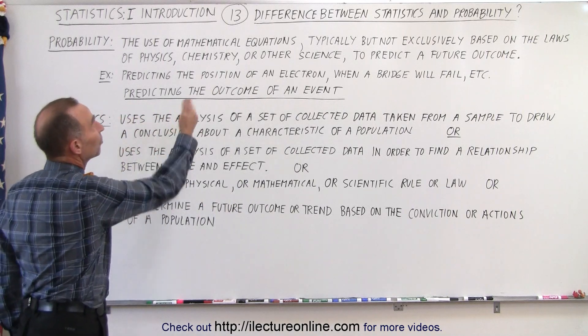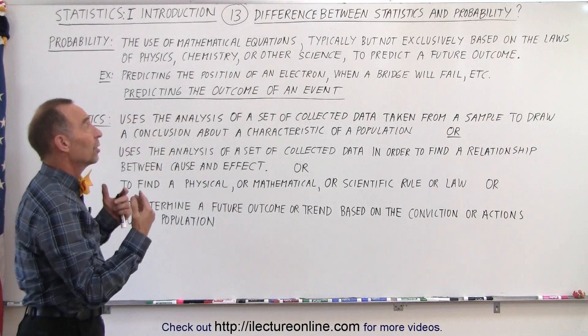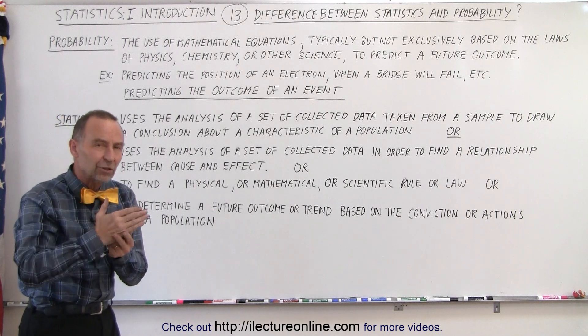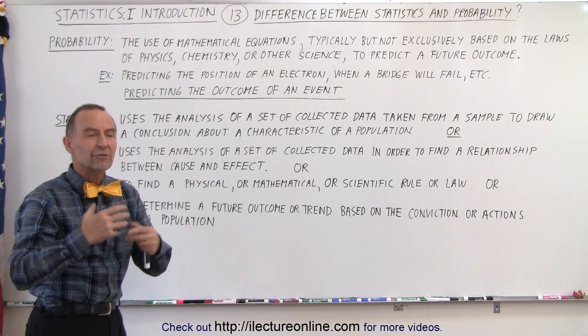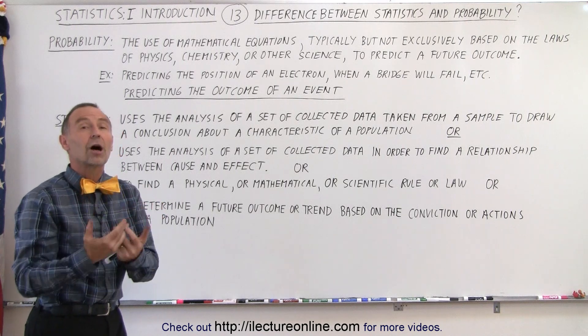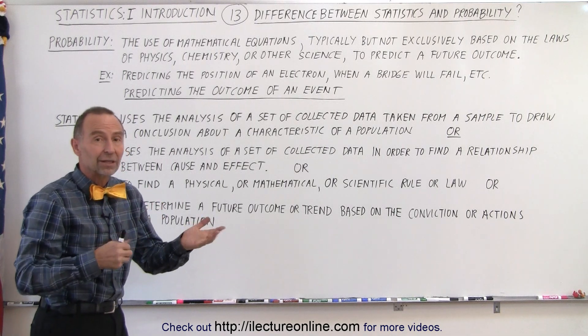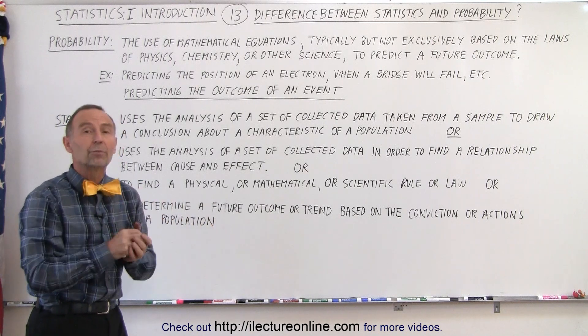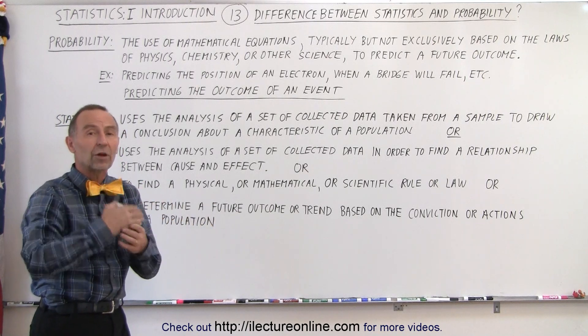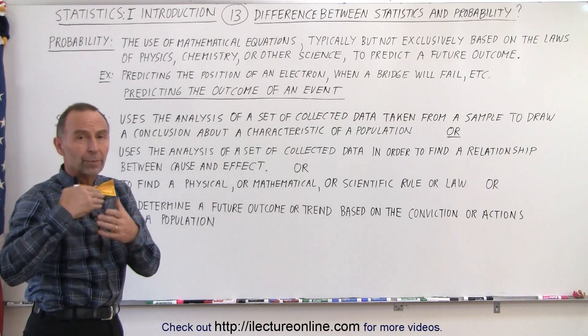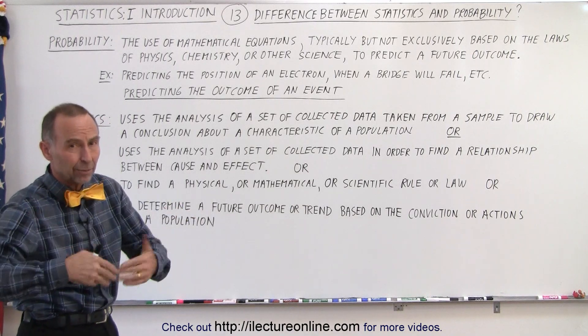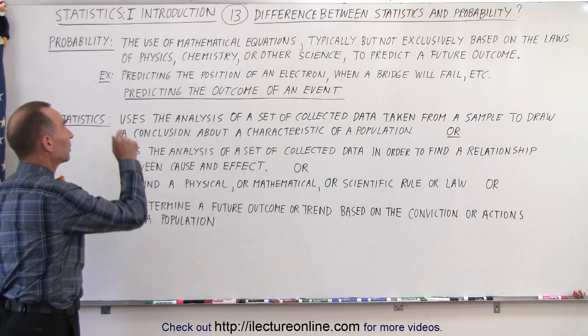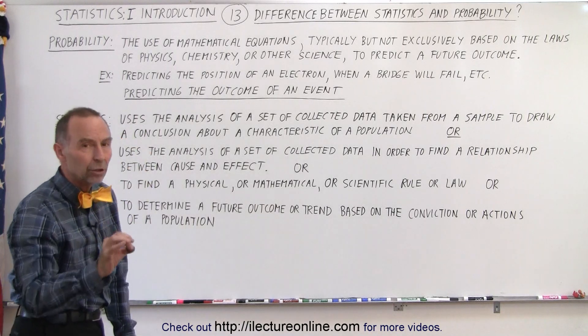In other words, predicting the position of an electron, predicting when a bridge will fail—all those things are based on very physical known quantitative, or I should say physical law characteristics, that will say that if the bridge is strong enough, if the bolts in the bridge are new enough and they're not rusted, they should be able to hold a particular weight. And therefore we can predict the probability of the bridge not collapsing and the bridge collapsing. We're predicting the outcome of a singular event.